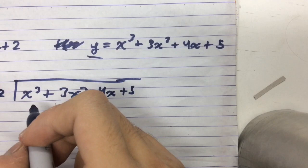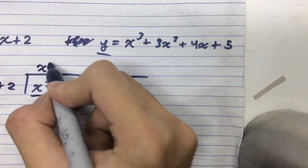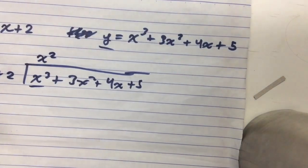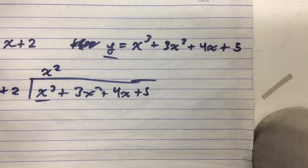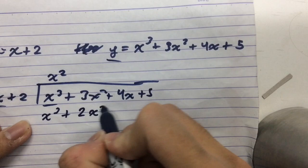Okay, so first thing we do is divide this term by this term. So that would give us x squared, obviously. After that, we multiply this to the divisor. So we get x cubed plus 2x squared.